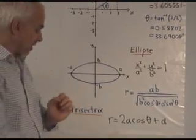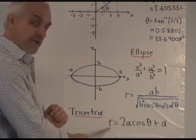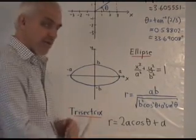It's r equals 2a cos theta plus a. So it gives us the relationship between r and theta. If we know theta, we can calculate r. If we know r, we can calculate theta more or less.